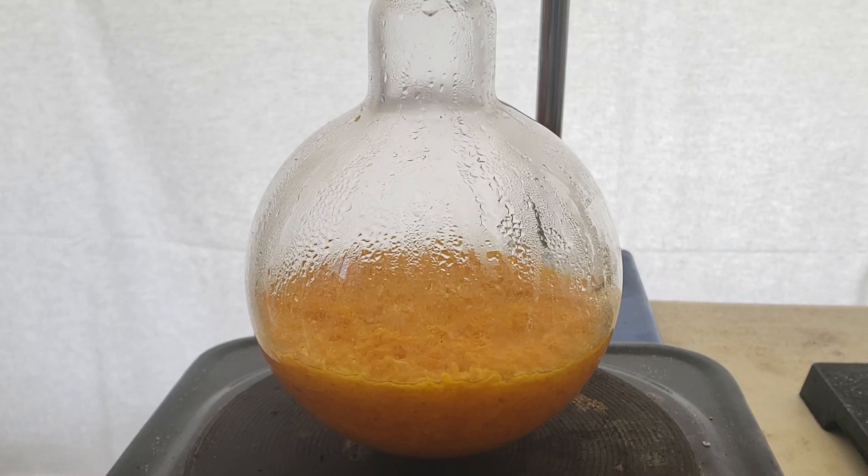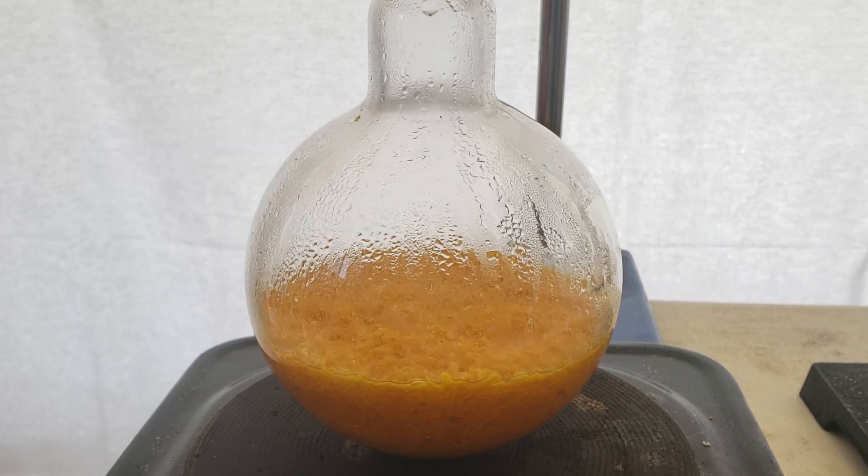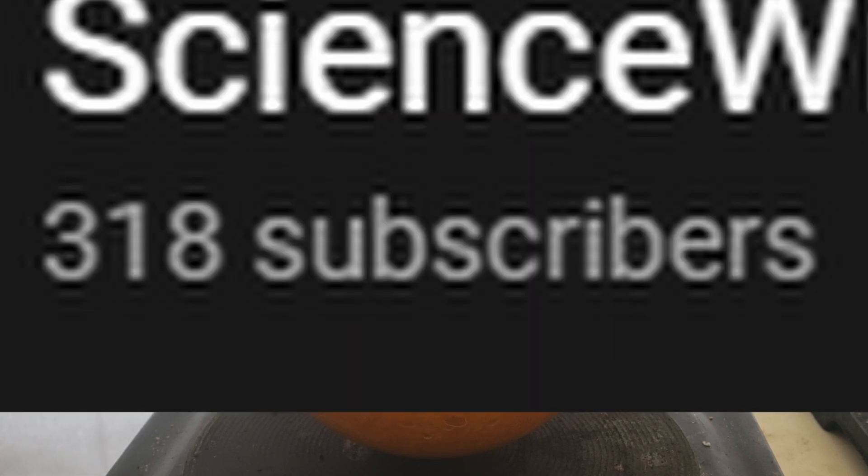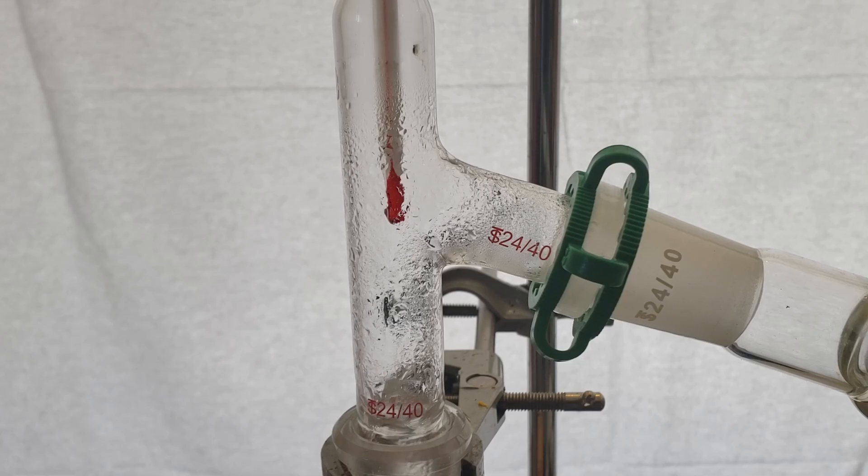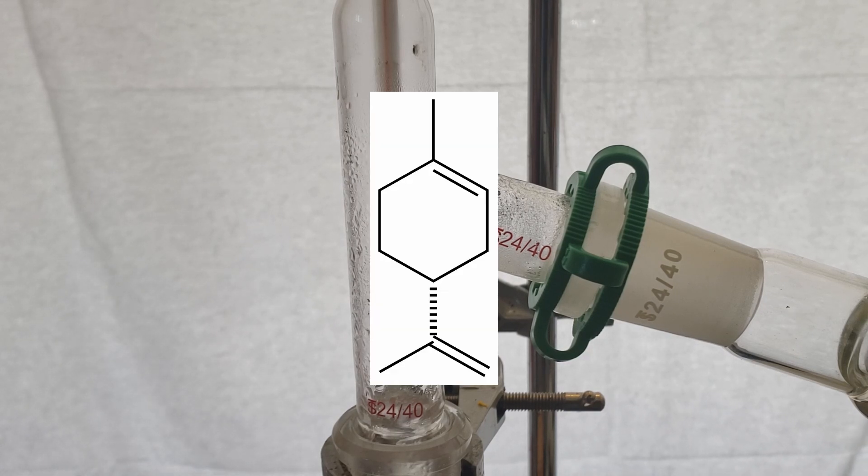Hello, and welcome back to another episode of Science with James. It's been a little while, and I've gained a few subscribers since my departure, but I'm back, and today I'm going to be steam distilling limonene from orange peels.